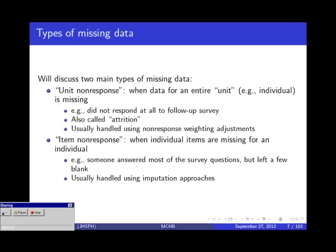We can handle unit nonresponse using nonresponse weighting adjustments. The other type of missing data is item nonresponse — a situation where someone started filling out a survey but didn't respond to some individual questions, or got tired at the end and stopped answering. This type of missing data is usually handled using imputation approaches, and that's what I'll be talking more about. We're going to spend most of our time on the item nonresponse situation, but we will also talk about weighting methods for unit nonresponse.